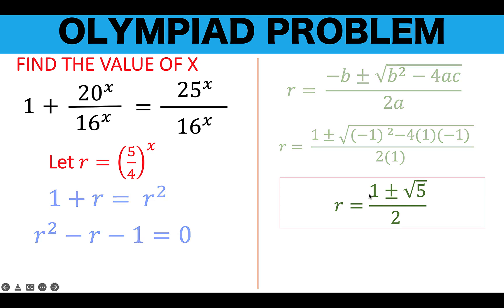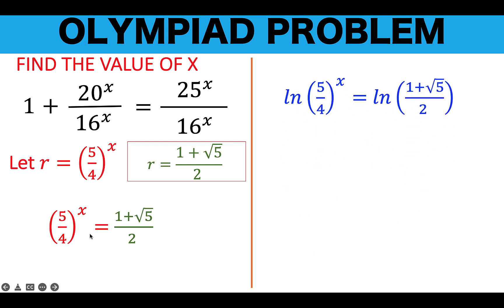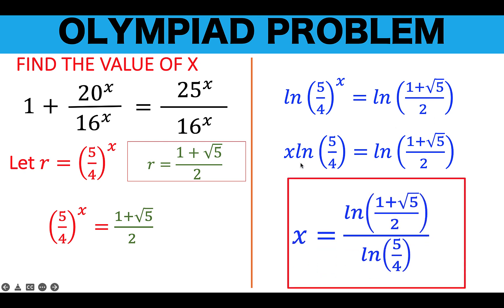We accept r equals 1 plus the square root of 5 over 2. From these two statements, we have 5 over 4 all raised to x equals r, and r equals 1 plus the square root of 5 over 2. This is the equation we use to find x. Taking the natural logarithm of both sides and applying logarithm properties, we get x times ln of 5 over 4 equals ln of the right side. Solving for x, we divide both sides by ln of 5 over 4.